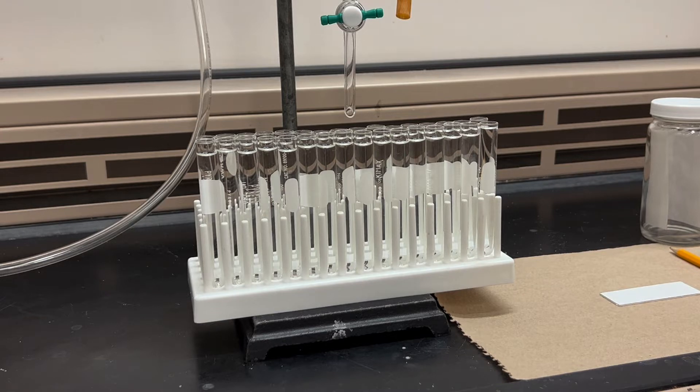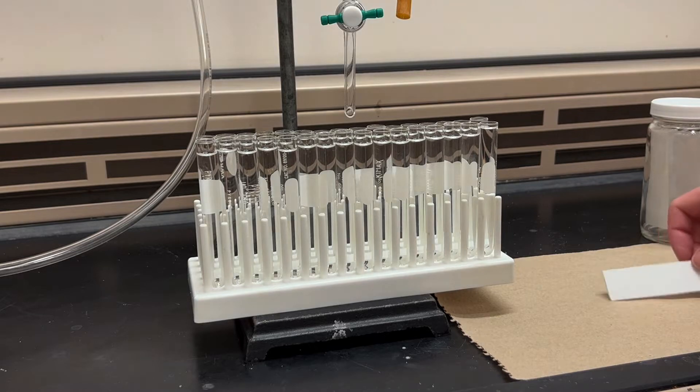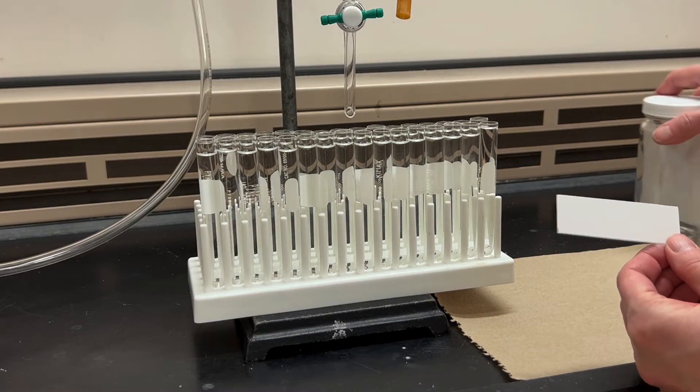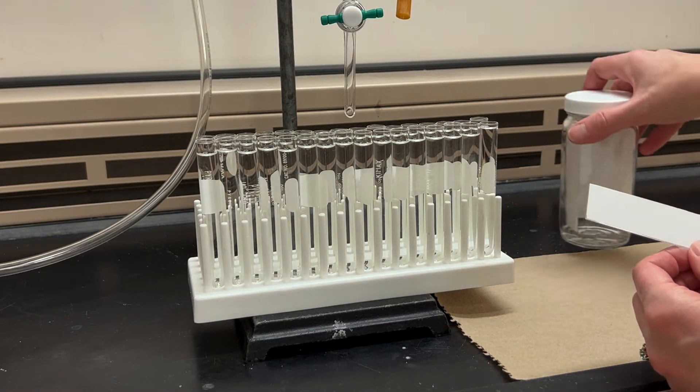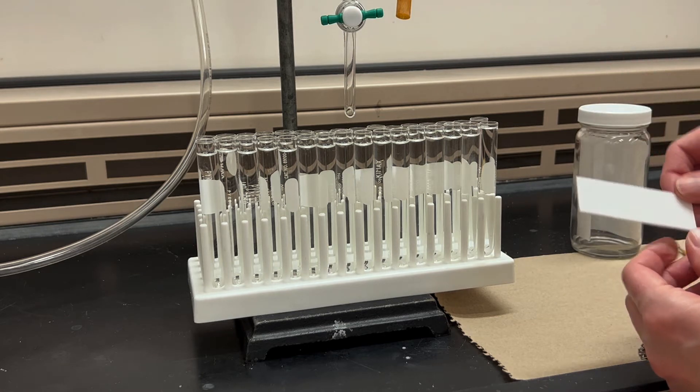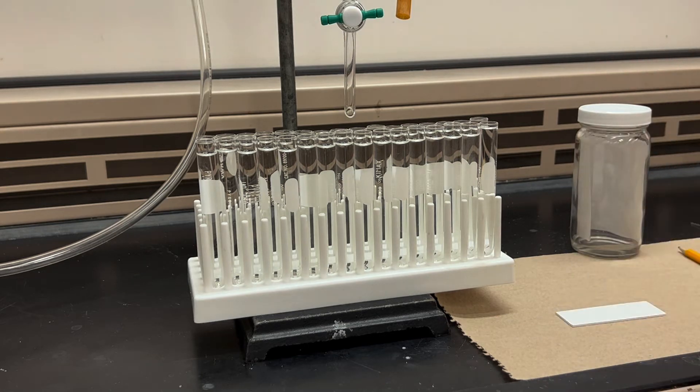So if you do have something that is UV active, what you would do is you would take a small sample of each of these fractions and put them onto a TLC plate, look at it under a UV lamp, and see if there is a UV active material there. And then if there is, then you'd want to run a TLC of those fractions, and then see, are those fractions actually pure? And are they of the RF that you're interested in?